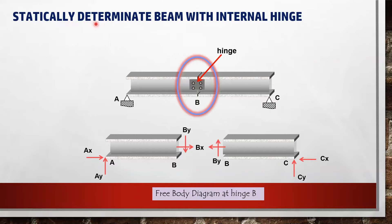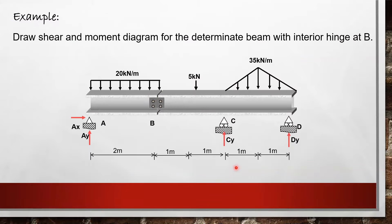This is an example of a statically determinate beam with an internal hinge. When we cut the section at the hinge, we can draw the free body diagram at point B. It is important to note that there is no moment at a hinge. We are required to draw the shear and bending moment diagram for the determinate beam with an interior hinge at B.